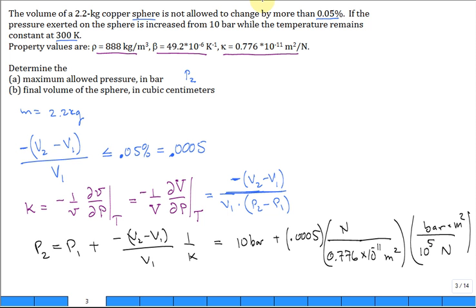The newtons go, meters squared go, we're left with bar. P2 equals 654 bar. If the final pressure is greater than that, there will be more than 0.05 percent volume change. If it's less, it will be less than that volume change.